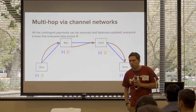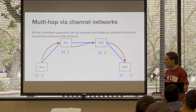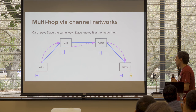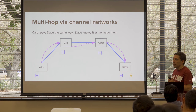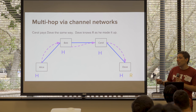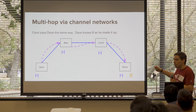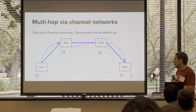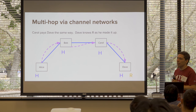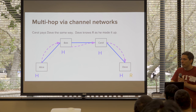If Dave doesn't reveal R back to Carol, Carol will eventually say: it's been a minute and you haven't told me R. If Carol can't connect to Dave at all — Dave is unresponsive — Carol can actually turn this back. Carol says, I'm not on the hook here. I have a potential gain if I know R, but it doesn't seem like I'm going to learn R since Dave's not online. So Carol can go back to Bob and say, let's cancel it because I can't get a path. Then they just make a new state in the channel without the contingent payment.